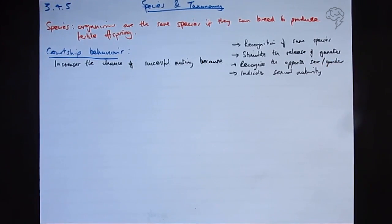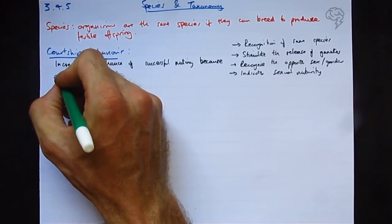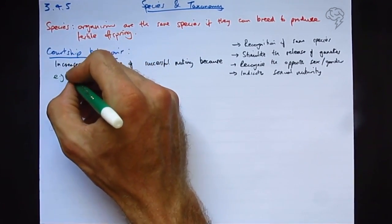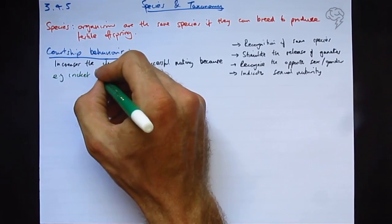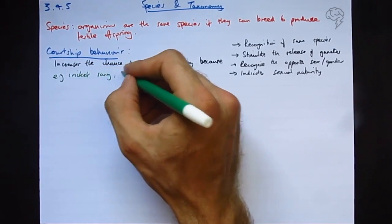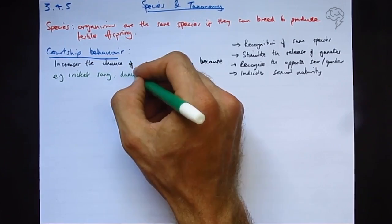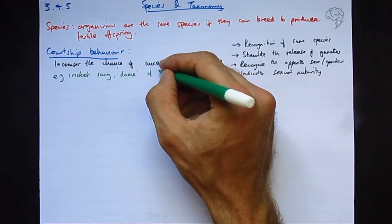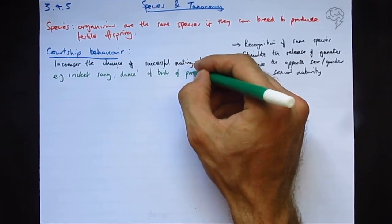Examples of this are like crickets have a specific song or some release pheromones, fireflies have a special light pattern, cricket song, or there's the dance with the birds of paradise, which are amazing. I'd recommend looking at them on YouTube, birds of paradise.